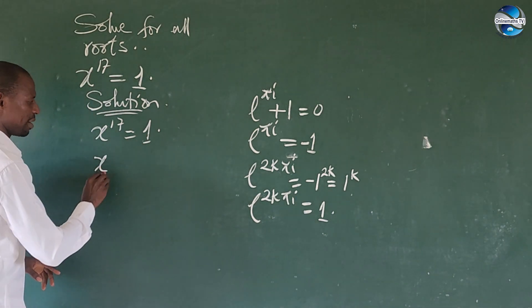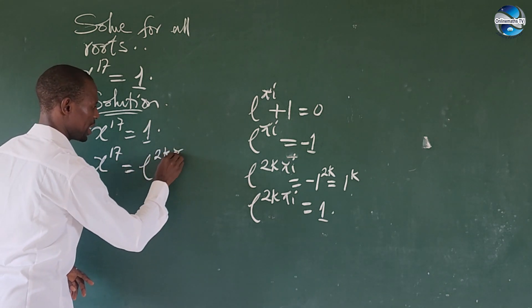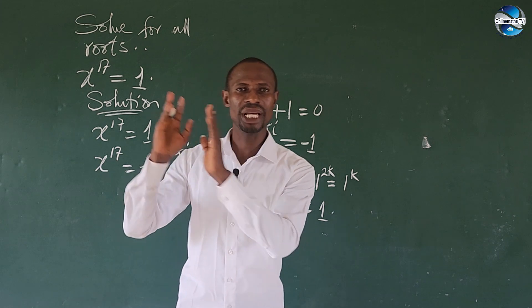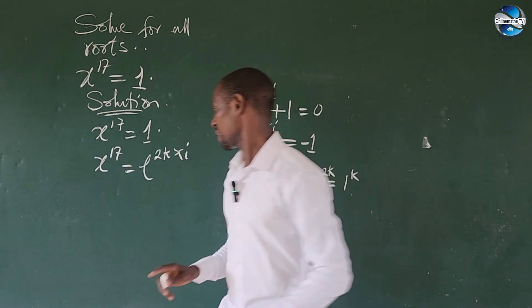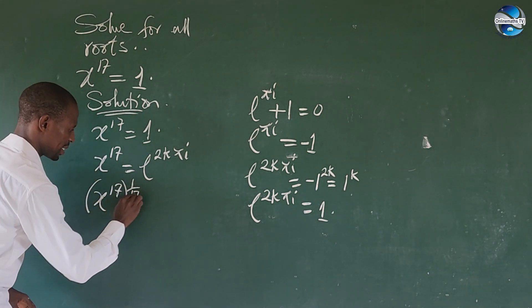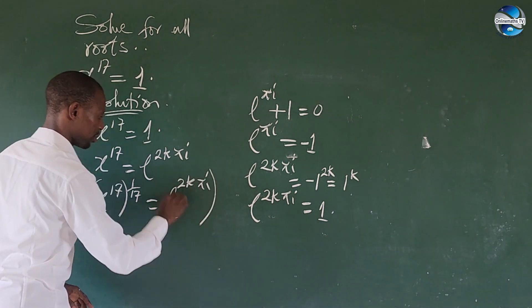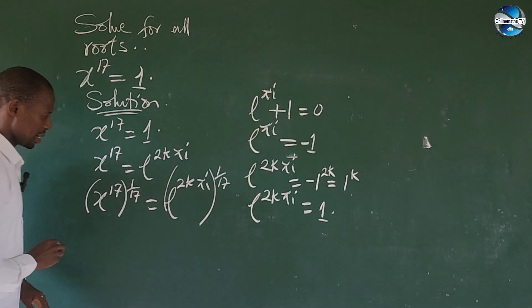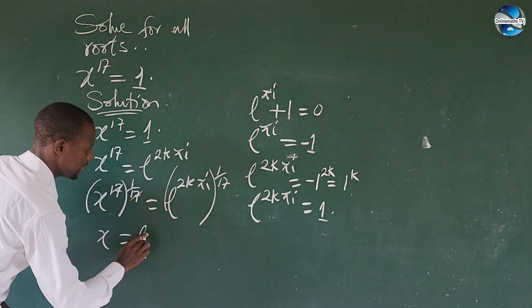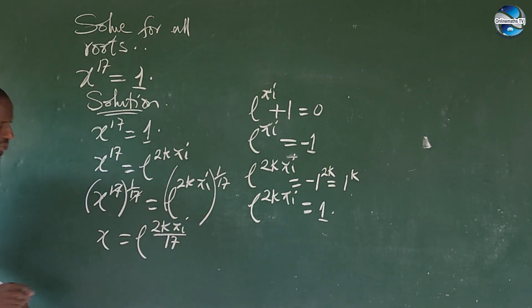We can substitute e to the power of 2k·π·i in place of 1 here. So we have x to the power of 17 equals e to the power of 2k·π·i. To make x the subject of the formula, we raise both sides to the power of 1 over 17. This gives us x equals e to the power of 2k·π·i all over 17.